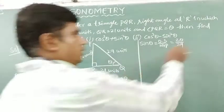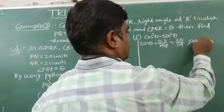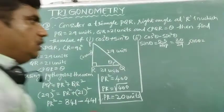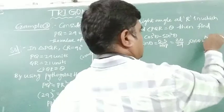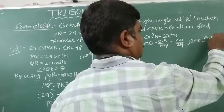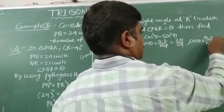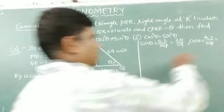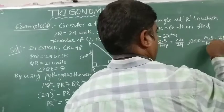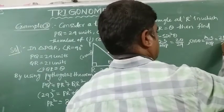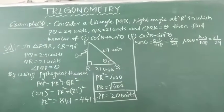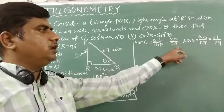Now find cos theta value. Cos theta equals the ratio between the adjacent side to the hypotenuse. The adjacent side is 21 units, and the hypotenuse is 29, so cos theta value is 21 by 29. Now we know sin theta value is 20 by 29.